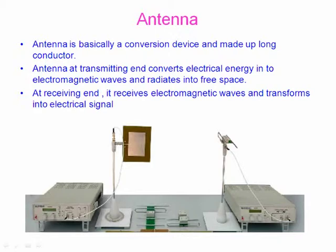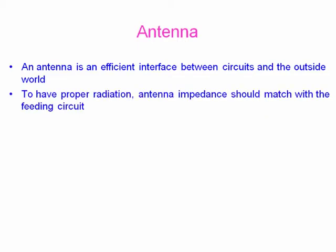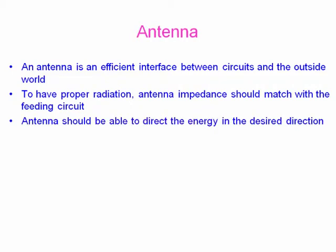Antenna is basically a conversion device and made up of a long conductor. At the transmitting end, it converts electrical energy into electromagnetic waves and radiates into free space. At the receiving end, it receives electromagnetic waves and transforms into electrical signal. Antenna is an efficient interface between circuits and the outside world. To have proper radiation, antenna impedance should match with the feeding circuit. Antenna should be able to direct the energy in the desired direction.